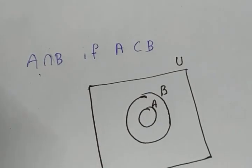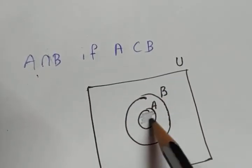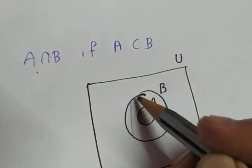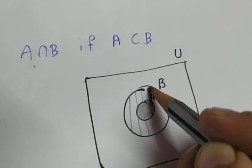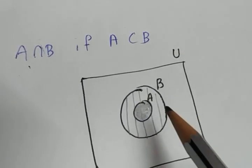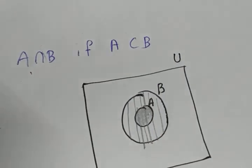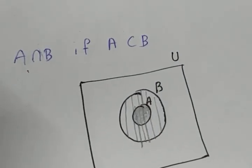We need to find A intersection B. So A is this shaded region isn't it? B let me shade like this. If we need to find intersection we have to take the region where both the shadings are there. Can you identify the region where both the shadings are there?